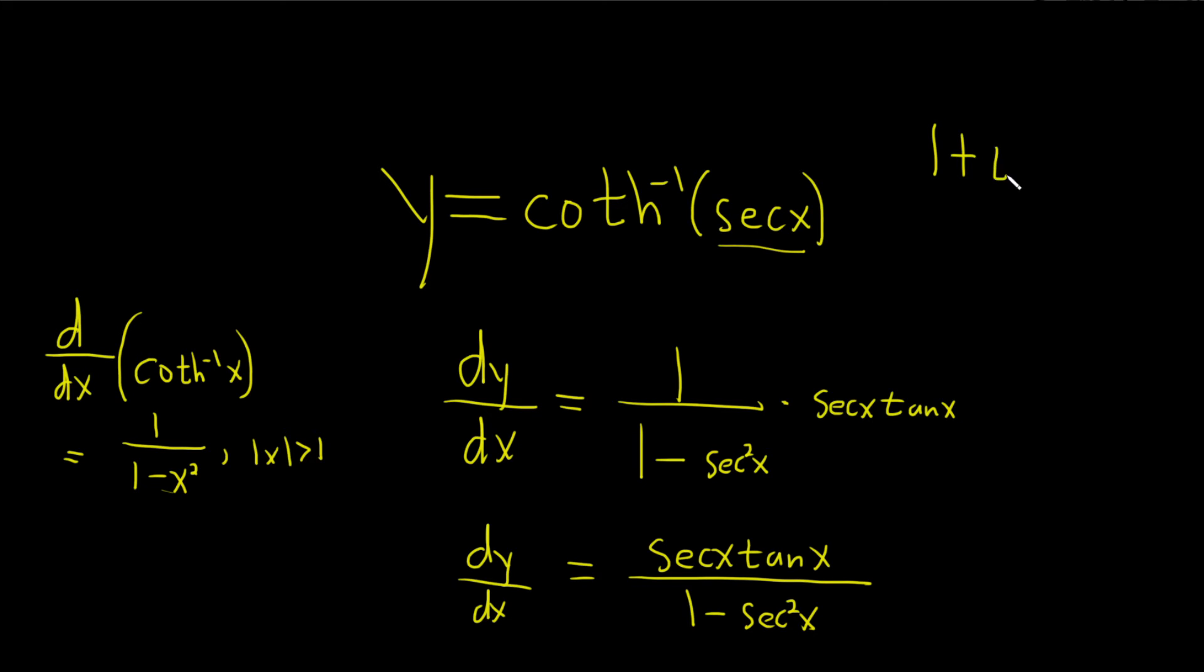1 plus tan squared is equal to secant squared of x. So that means that if you subtract 1 from both sides, you get tan squared is equal to secant squared minus 1.